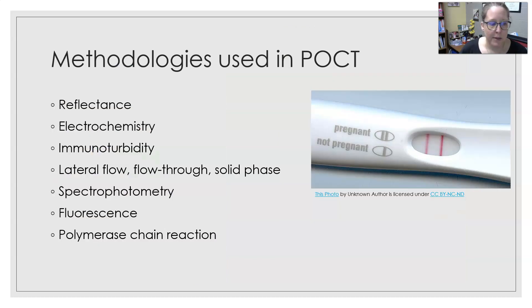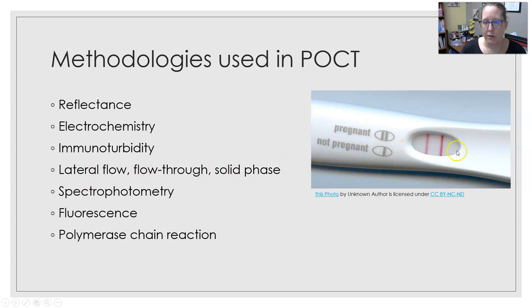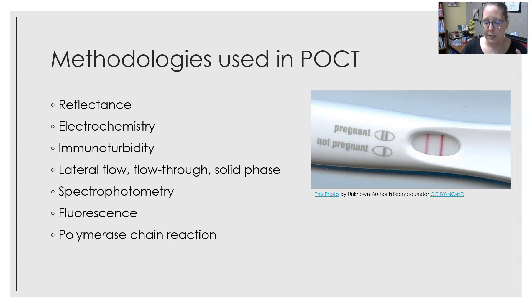The methodologies used in point of care testing include: reflectance, which detects a color change on a surface; electrochemistry, used in ABG analyzers with electrodes to detect gases and electrolytes; immunoturbidity, where antigen-antibody reactions cause turbidity; lateral flow or flow-through solid phase immunoassays, such as the pregnancy test; spectrophotometry, which uses light to detect color changes; fluorescence detection; and polymerase chain reaction, used in many small analyzers doing COVID testing. The next video will cover quality in point of care testing.